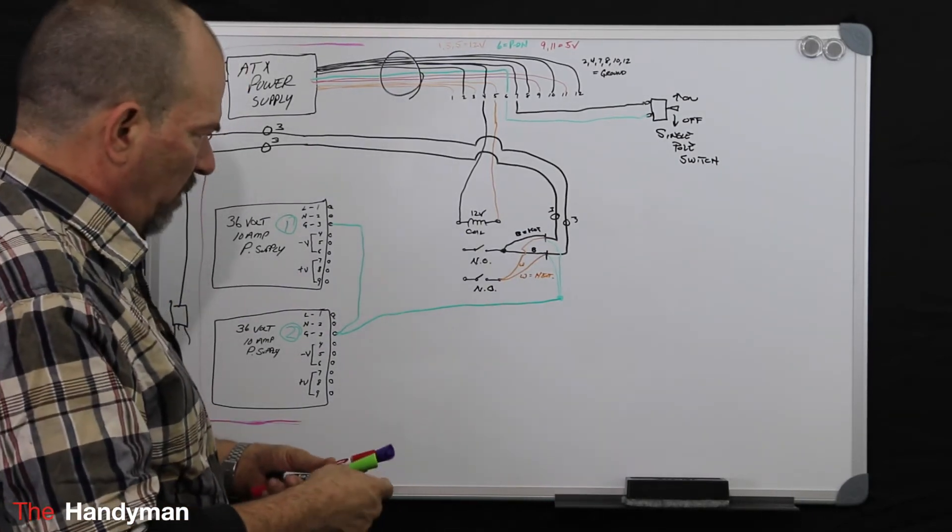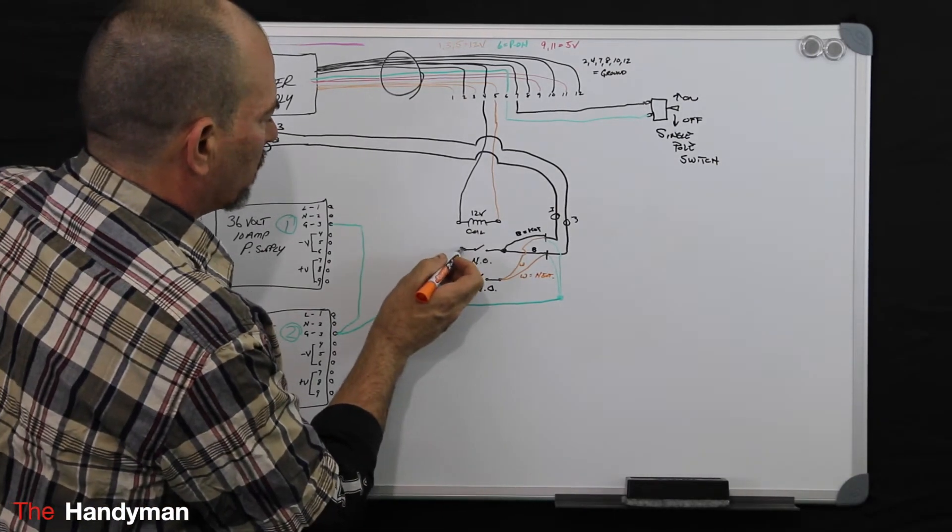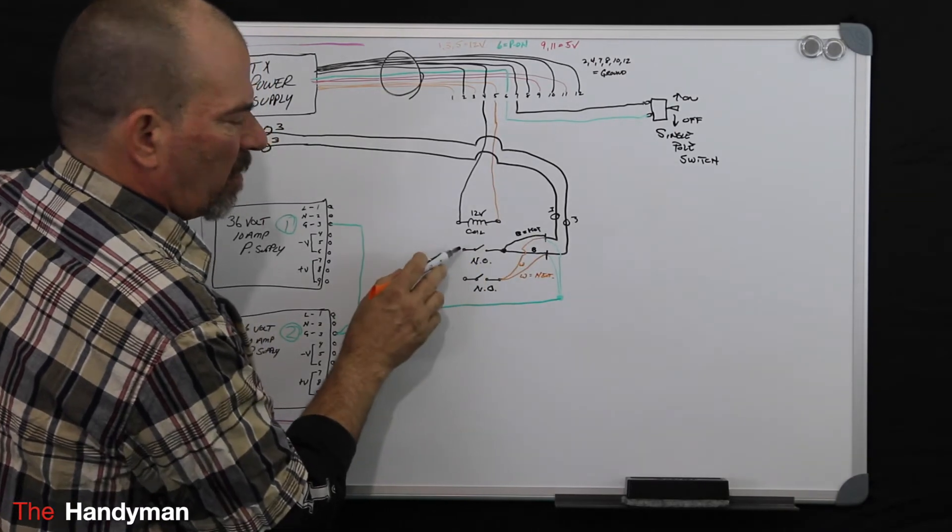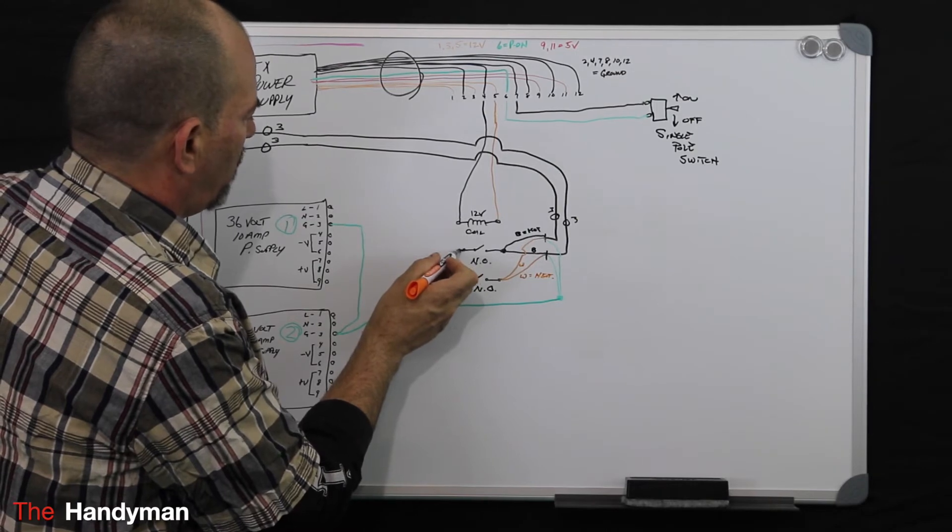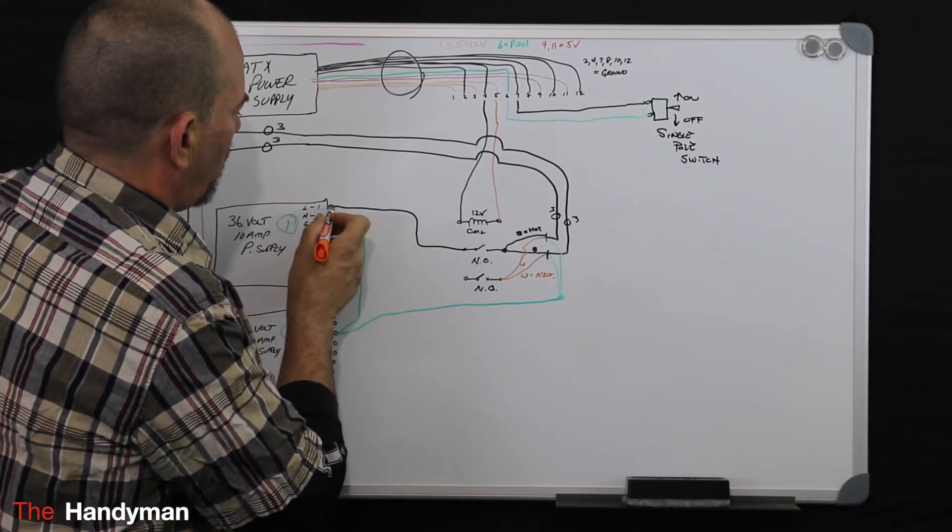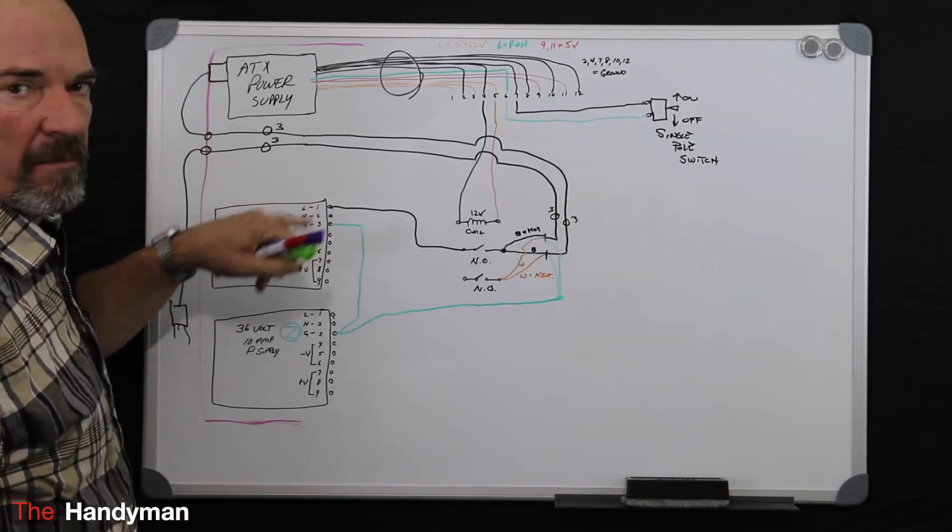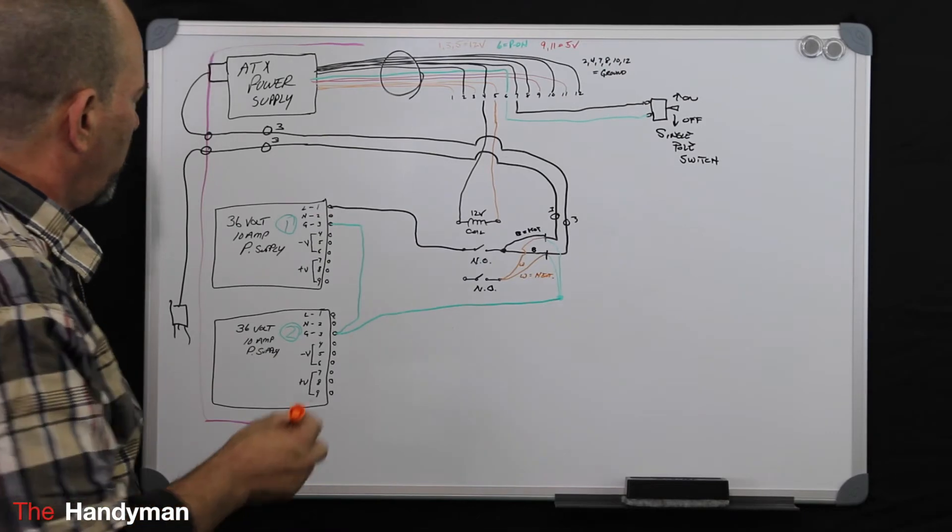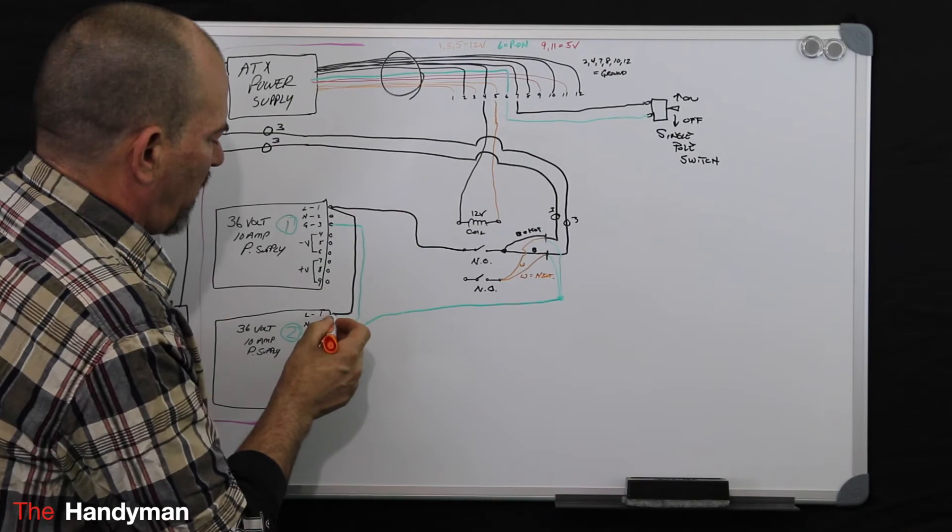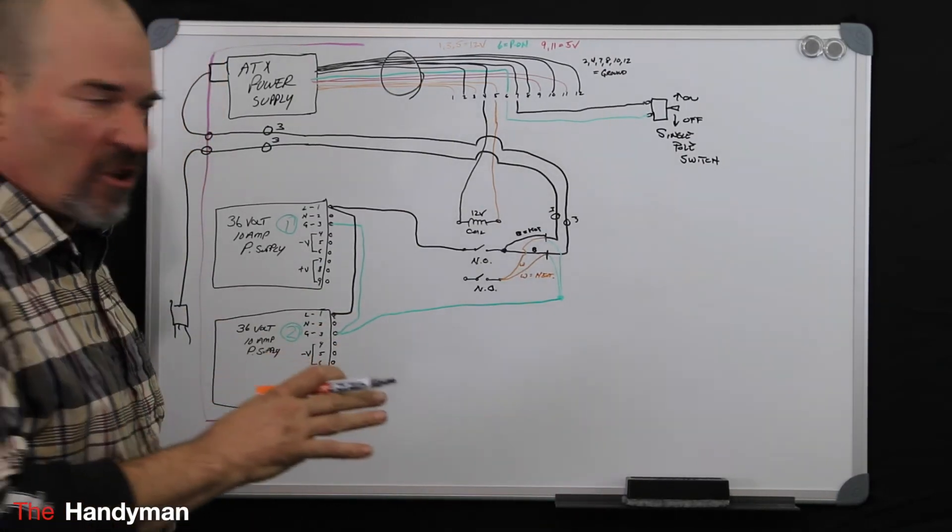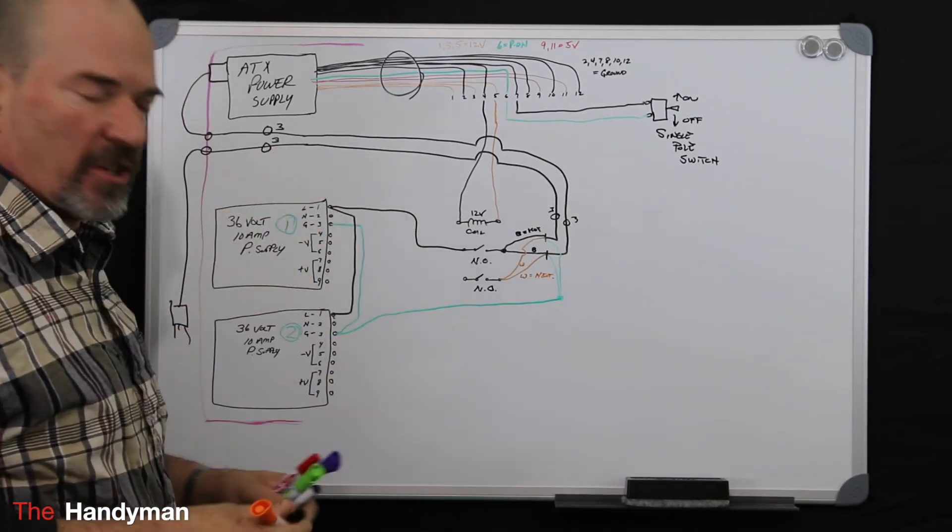Now that you have that done, you're going to take your hot from the other side of your normally open contacts, make sure it's normally open, and you're going to go to terminal number one, which is your line on your power supply. Then the same thing, jumper it down to the other one. And excuse my drawing, I'm not going to get all fancy and put everything in straight lines and parallel with each other.